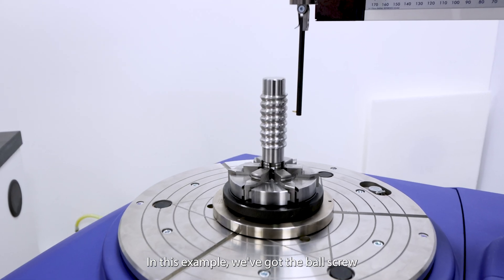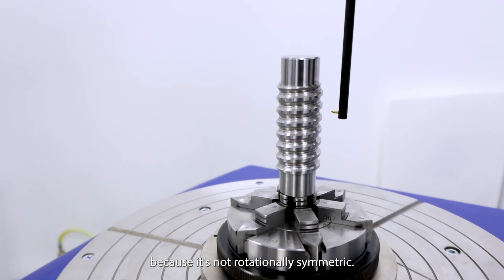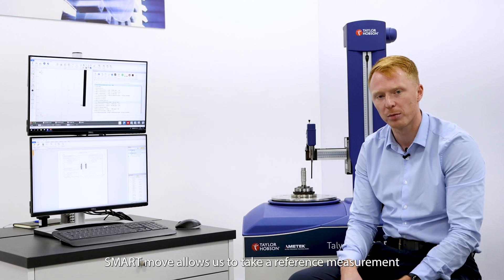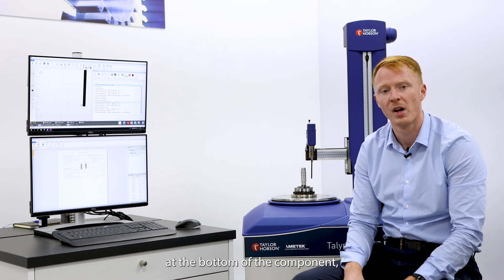In this example we've got a ball screw, and the ball screw is unique because it's not rotationally symmetric. SmartMove allows us to take a reference measurement at the bottom of the component and then we can quickly and easily move to where we want to measure.